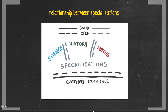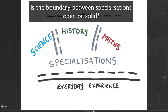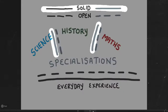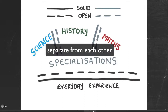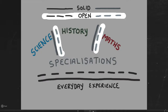Let's start with the relationship between specializations. In the diagram in front of you, I've tried to capture the boundary relationship between different subjects or specializations as either being solid — drawn with a solid line — or open — drawn with a broken line. A solid line between different subjects means they are strongly separated from each other, taught distinctly by different teachers in different classrooms at different times with different books and strong distinct identities.